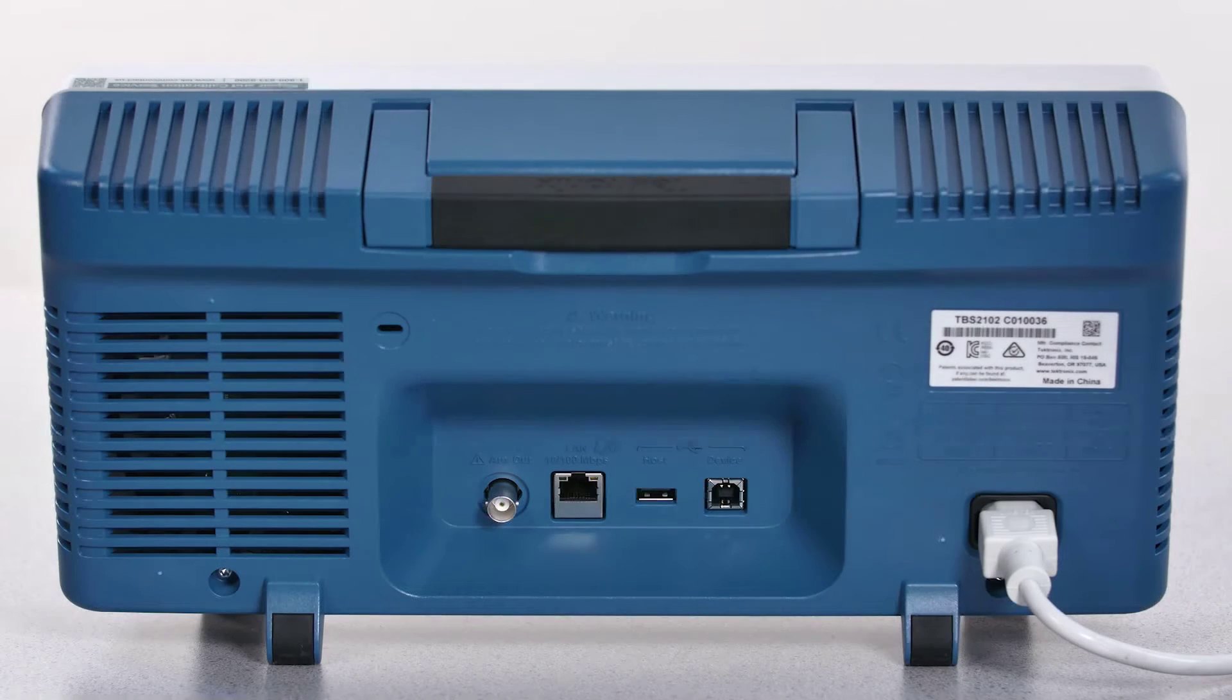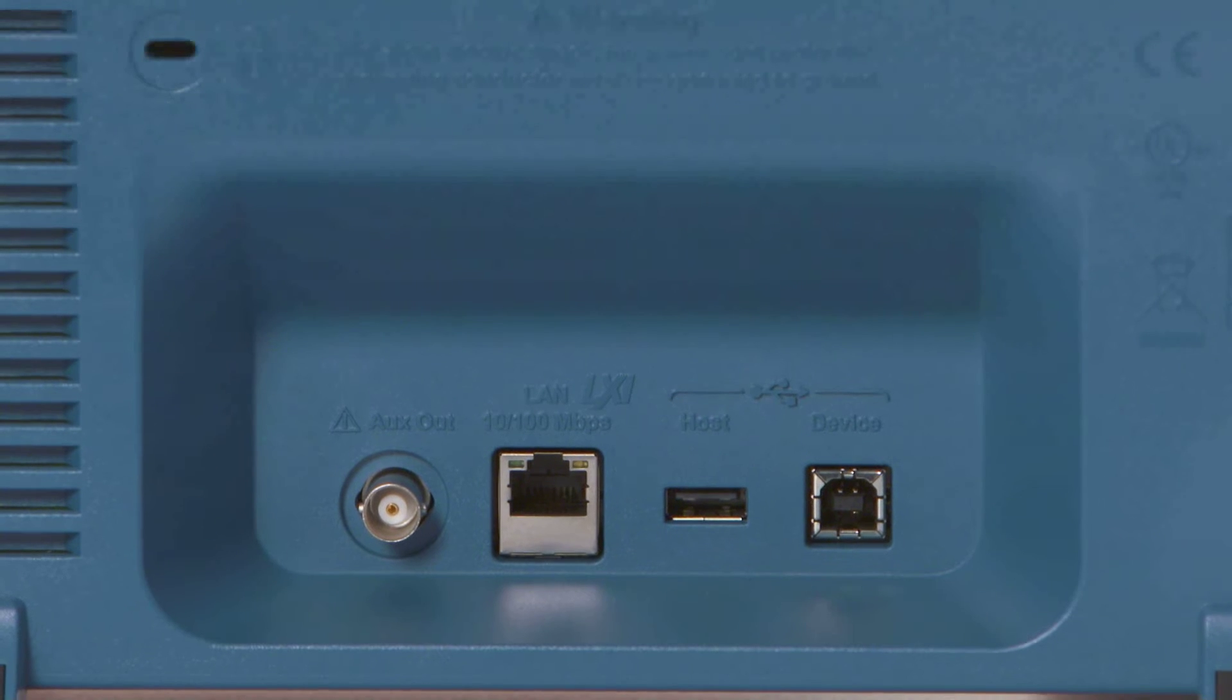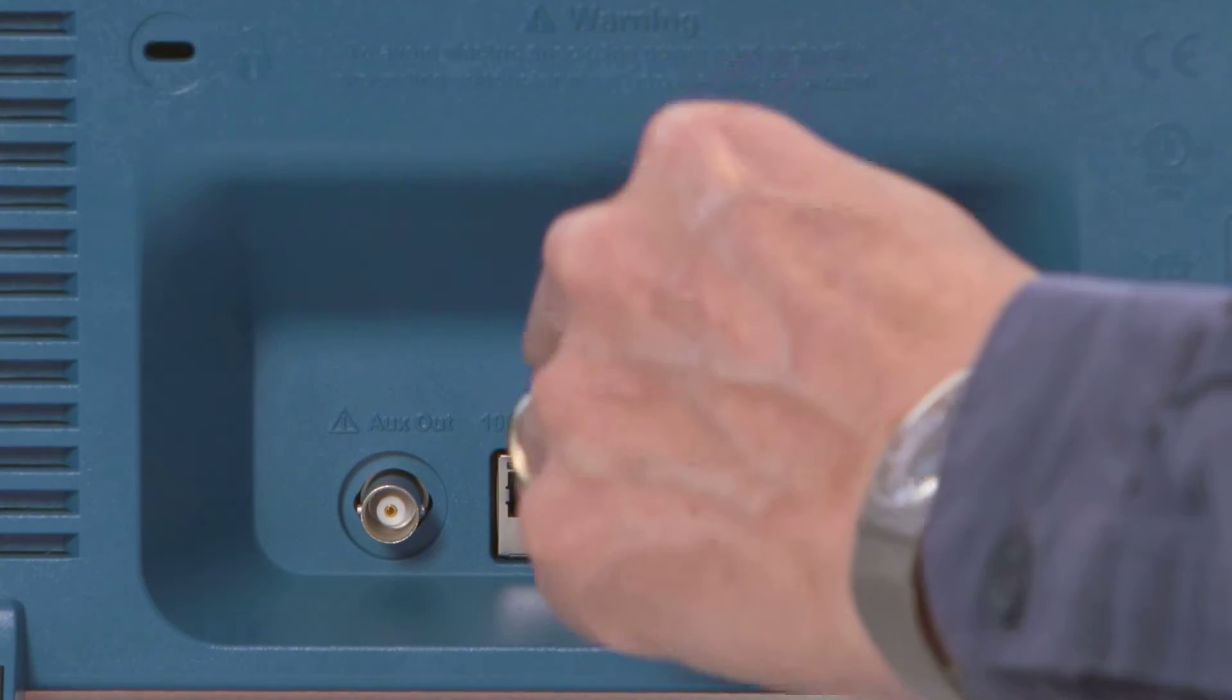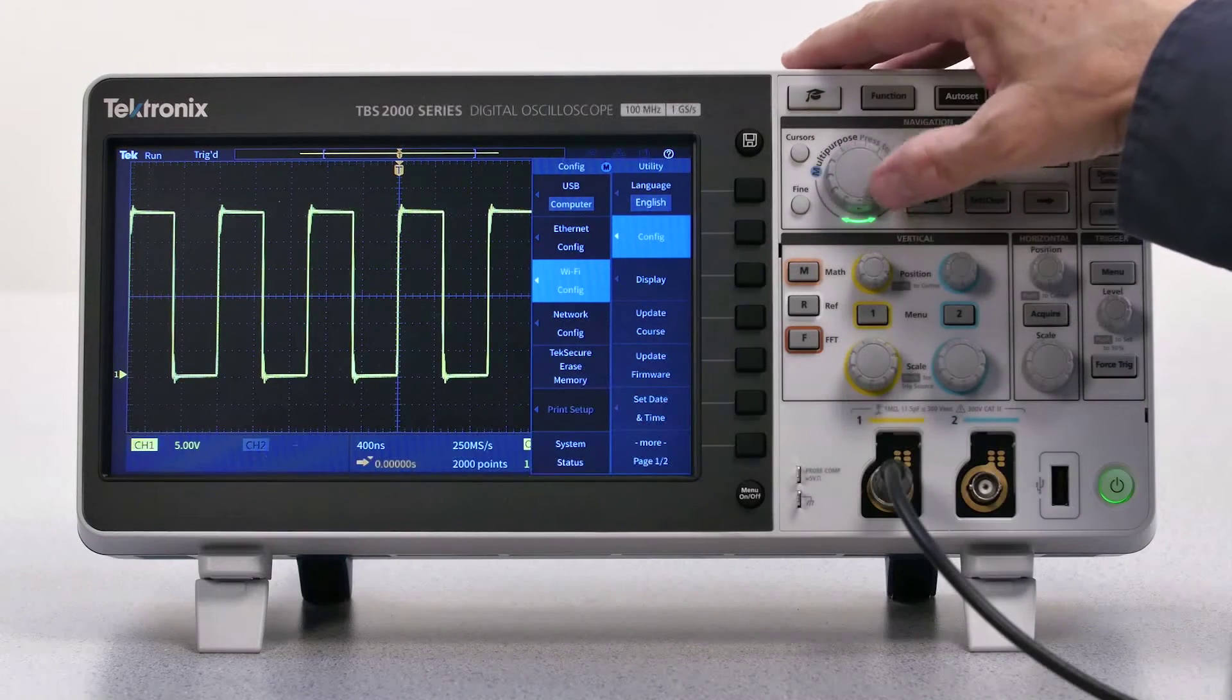The scope has several alternatives for connecting to PCs and other devices, including USB and Ethernet. But the TBS 2000 is also the first basic scope to support wireless communications using a Wi-Fi adapter.